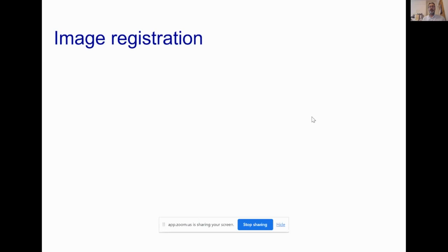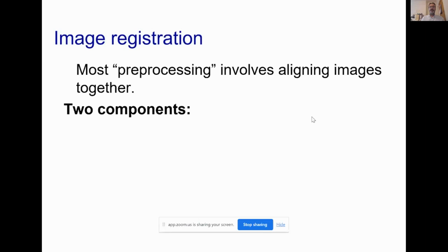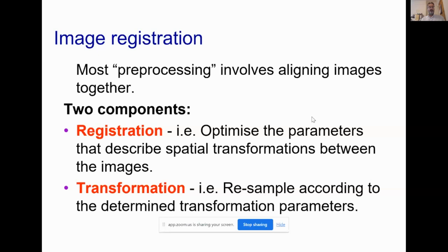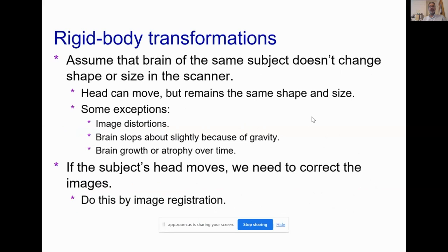Most of the pre-processing for fMRI analysis is some form of image registration. There are generally two components: the first involves the registration itself, where we optimize a number of parameters describing a spatial transformation that maps images together. Once we've estimated those parameters, we can apply the transformation and resample our images according to the estimated parameters.